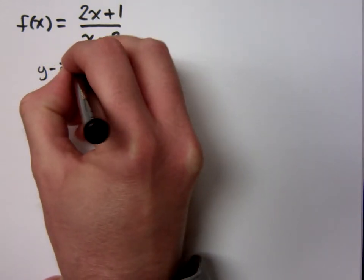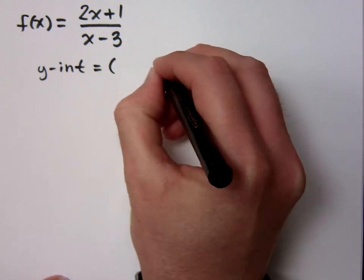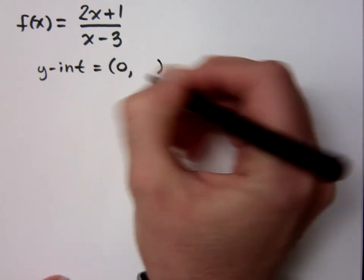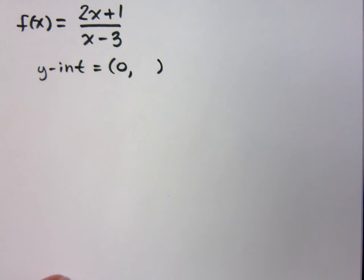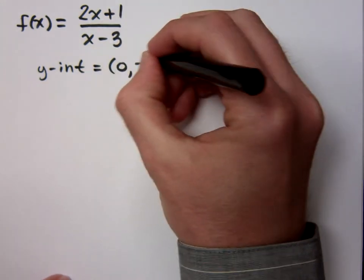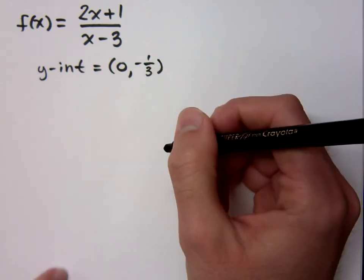What is the y-intercept? You know the y-intercept is when x is zero, so figure that out. It's not that bad. It is negative one-third. So zero, negative one-third.